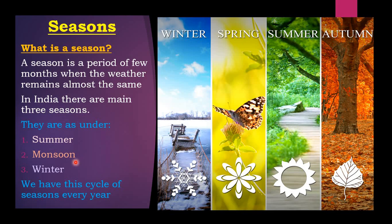In India there are three main seasons: summer, monsoon, and winter. We have this cycle of seasons every year. For example, right now we are in the winter season. Every season lasts for about three months, though it can extend or shorten slightly.